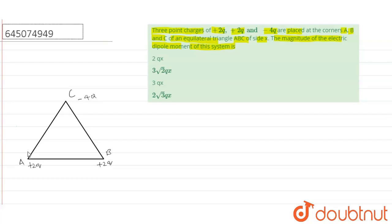Now see, I can break it in minus 2q and minus 2q. Then there will be one dipole here and one dipole here. The distance is x, x and x. Let us say this is p1 and this is p2.